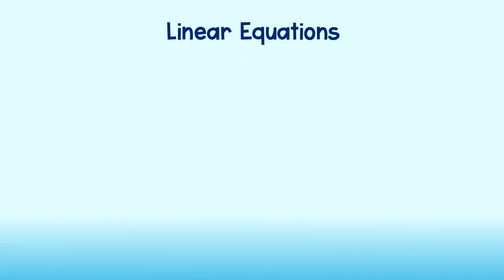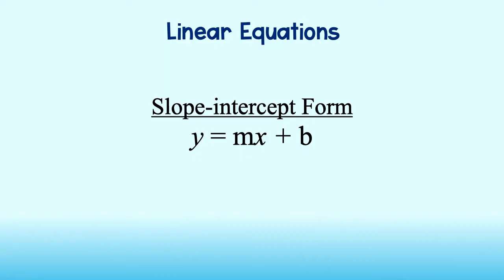Before we start, remember that a linear equation is just an equation that produces a straight line once graphed. A common form of this type of equation is slope-intercept form, or the form y equals mx plus b. This is the form we will be focusing on in this lesson.